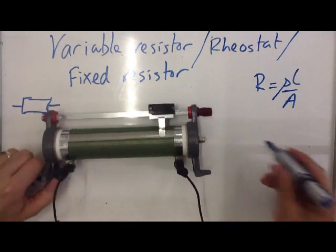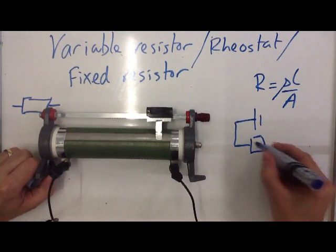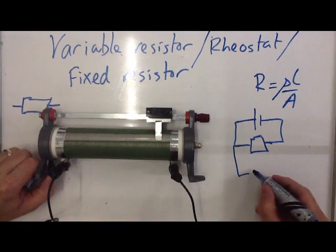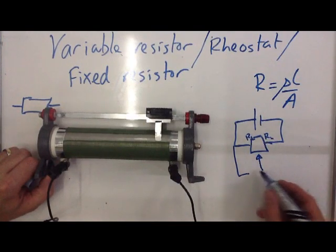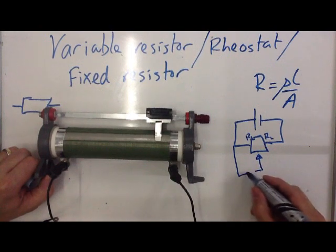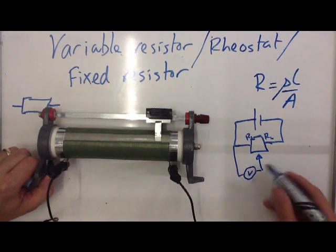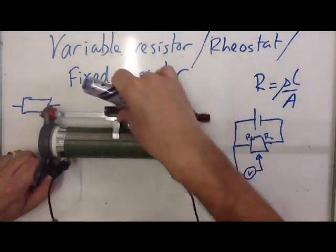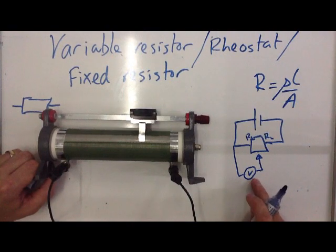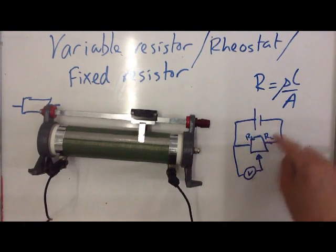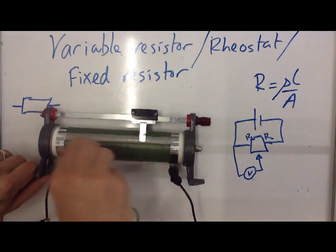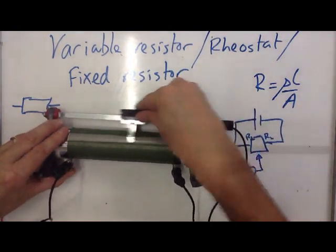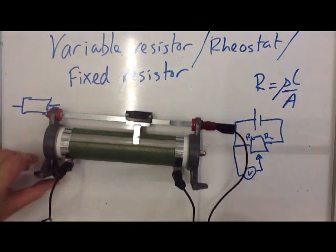If I want to use it as a rheostat — now a rheostat, if you remember, is a potential divider. It looks like a fixed resistor, but then I also have this tiny little fly lead coming off here. I can change the values R1 and R2 by moving this fly lead across. Normally we have a voltmeter or some sort of device there, and by moving this bar along we change the voltage. To set that up, we set it up as a fixed resistor first — the connections are here and here — and then we have our fly lead, moving it up and down like this. That's this piece of equipment set up as a rheostat.